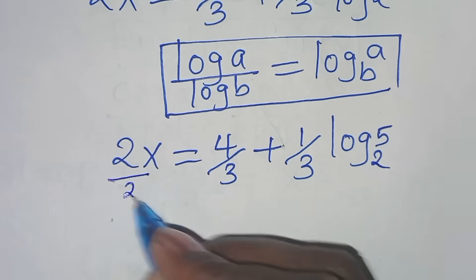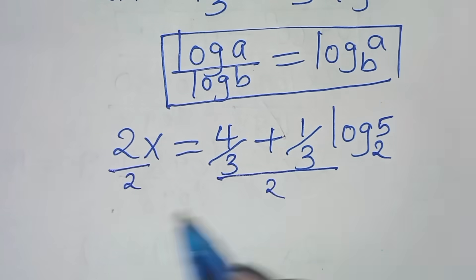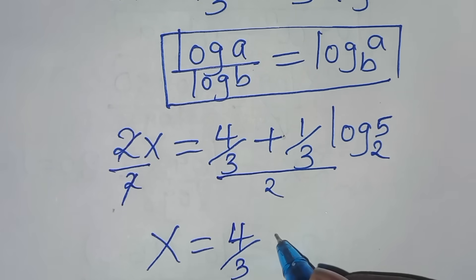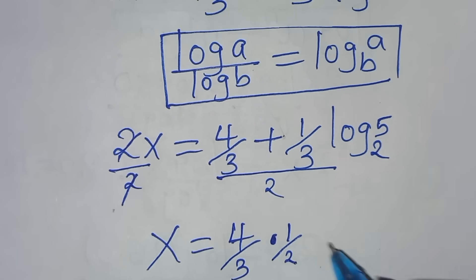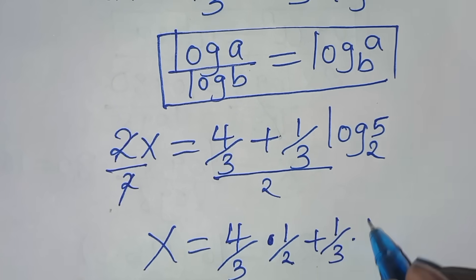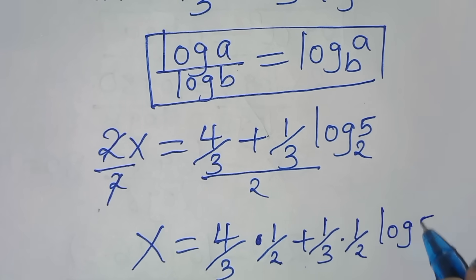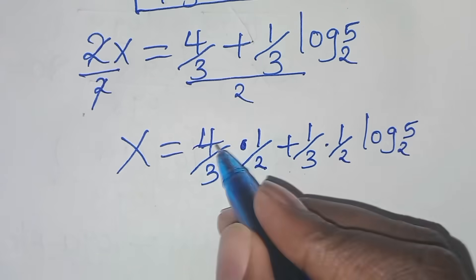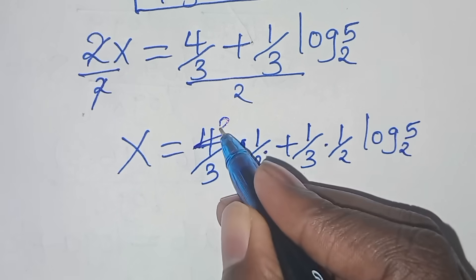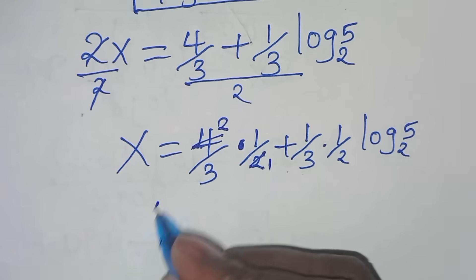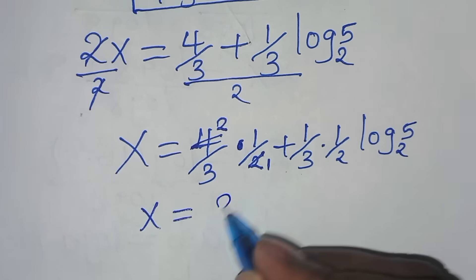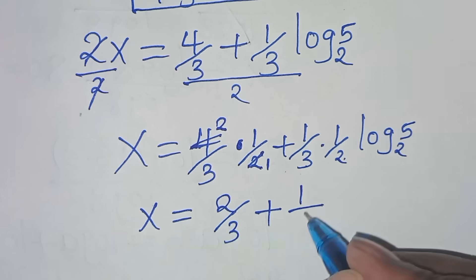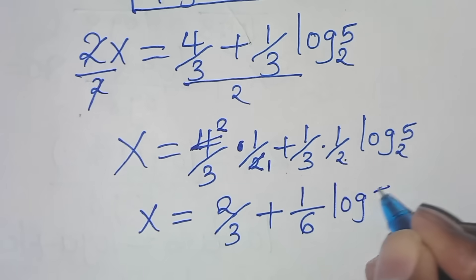The next step is to divide both sides by 2, so that we have x equal to 4 over 3 multiplied by 1 over 2, then plus 1 over 3 multiplied by 1 over 2 times log₂(5). From here we have x equal to 4 over 6, which simplifies to 2 over 3, plus 1 over 6 times log₂(5).